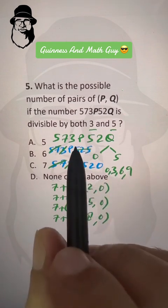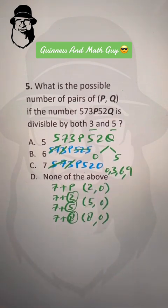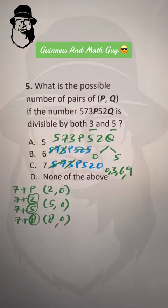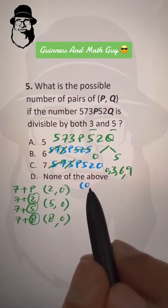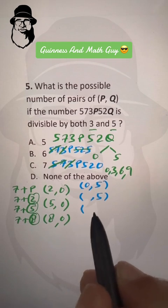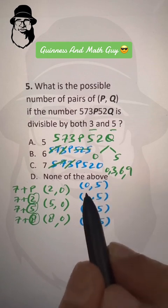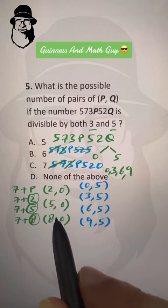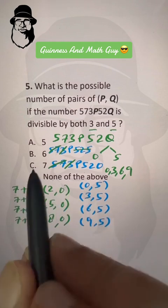So the values of p when q is 5 are 0, 3, 6, and 9 — that's four options. When q is 0 there are three options, and when q is 5 there are four options. Three plus four is seven, so the answer is 7, which is choice C.